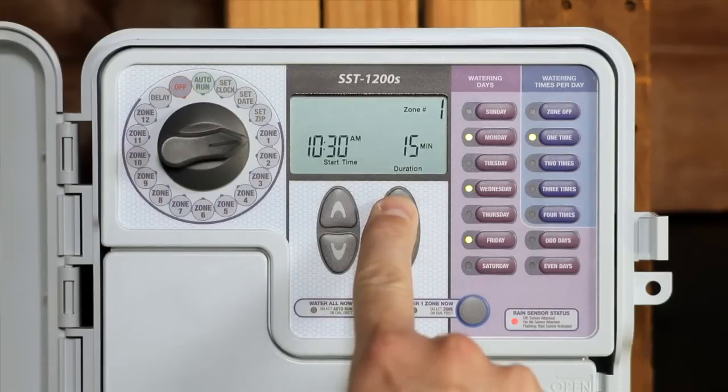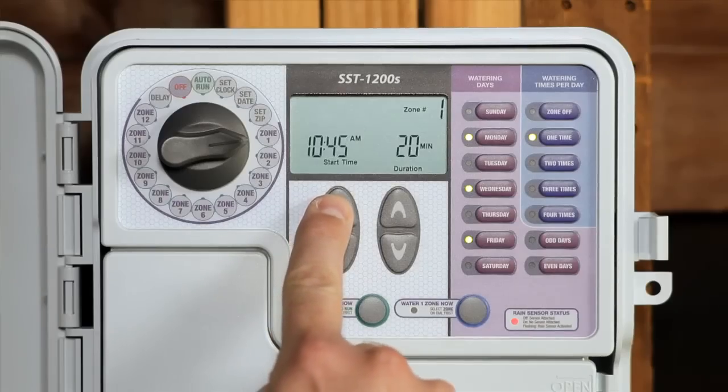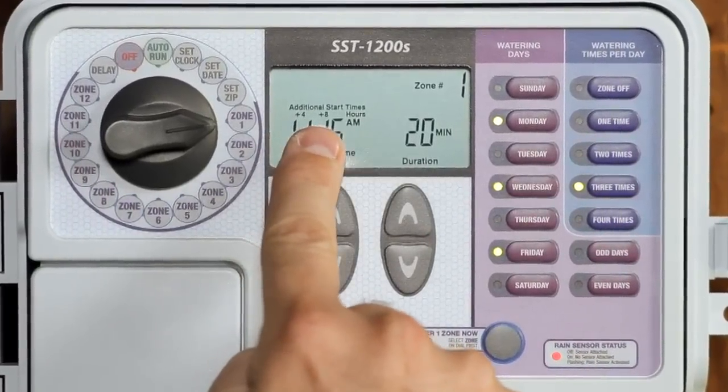For each zone you'll also set the number of minutes to water using the right up down arrow key, and you'll set the time watering should start using the left up down arrow key. Remember, if you selected multiple watering times per day, you'll set only the first watering time. The timer will display how many hours it will wait before starting each of the additional watering sessions.